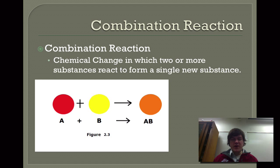Here is a graphic that will demonstrate what this can look like. The top portion shows a red circle and a yellow circle, and they combine to make an orange circle. We can go with the letters, A plus B yields or reacts to form AB. So it's two or more substances that react to form a single new substance.